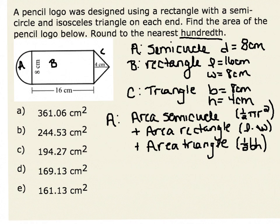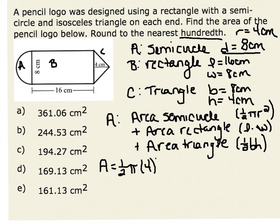Let's find the area of the entire pencil logo. The area is given by the semicircle formula: one half times pi times radius squared. Since the diameter of the semicircle is 8 centimeters, the radius is 4 centimeters. Therefore the area of the semicircle is one half times pi times 4 squared. The area of the rectangle is 16 times 8. Finally, the area of the triangle is one half times the base of 8 times the height of 4.